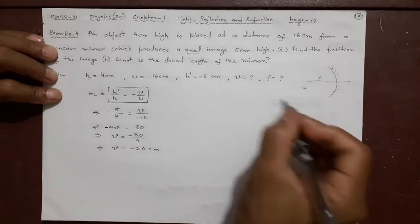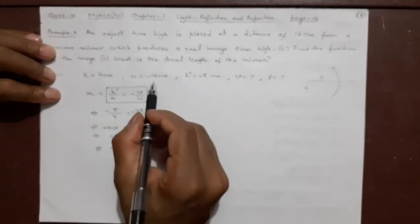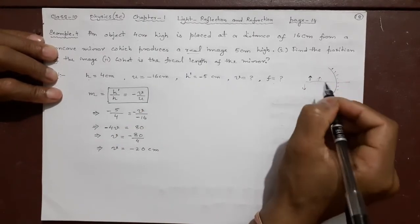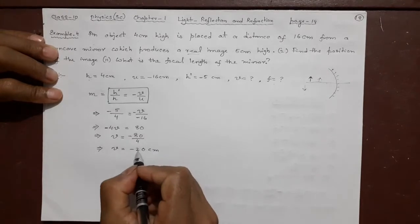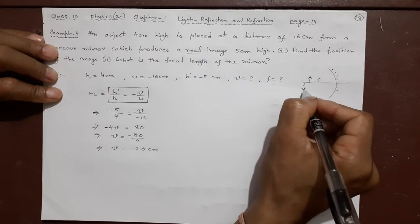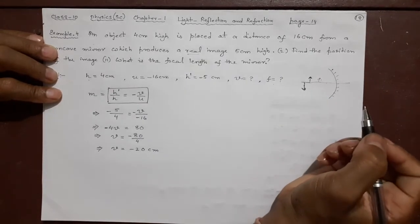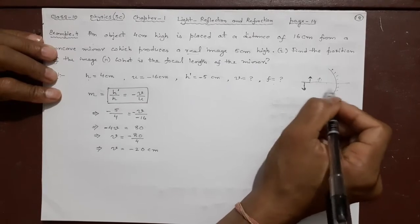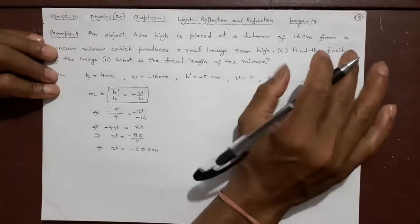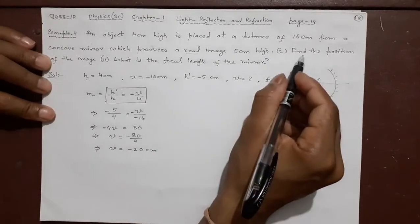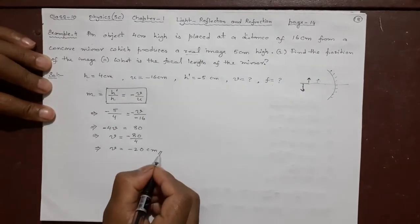The object is how much, how far is the object? Minus 16. Somewhere here is the object. Suppose then the image will be 20. 16, 20 means slightly far here maybe. This is 16. This is 20. It is this type of connection. No need to draw this. Just for understanding only. I have given there. So you got your answer. Find the position of the image. This is found.